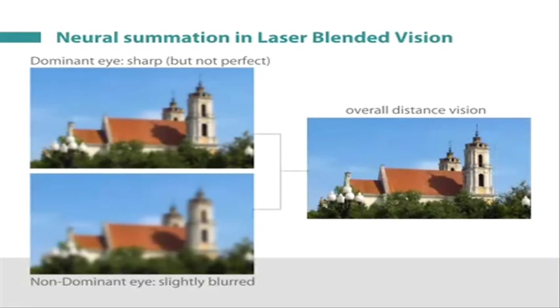This demonstrates the presence of neural summation between the images from the two eyes, despite the relatively blurred distance image in the near eye.